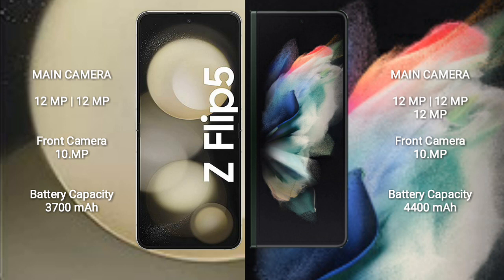The Samsung Galaxy Z Flip 5 rear cameras are 12MP plus 12MP, and the front camera is 10MP. The Samsung Galaxy Z Fold 3 has a rear triple-camera setup: 12MP plus 12MP plus 12MP, and a front camera of 10MP.